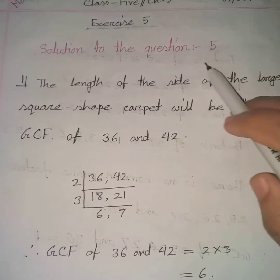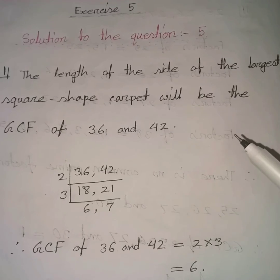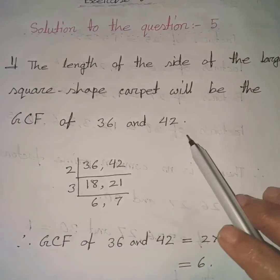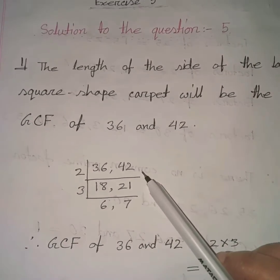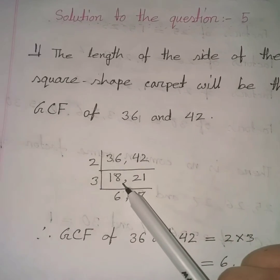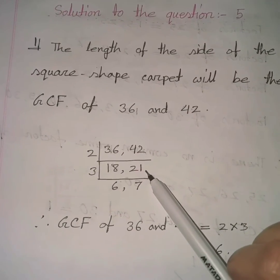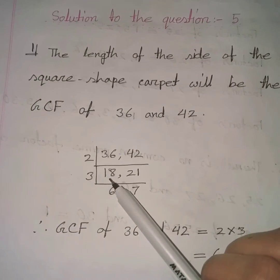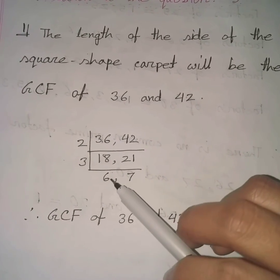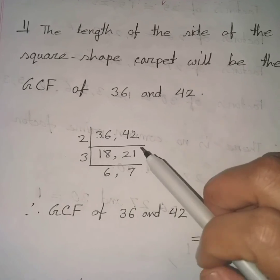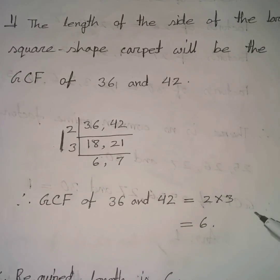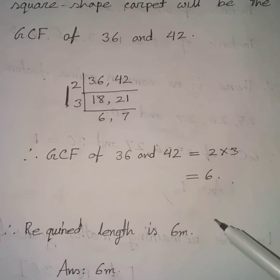The length of the side of the largest square-shaped carpet will be the GCF of 36 and 42. Both 36 and 42 are even, so divide by 2: 36÷2=18, 42÷2=21. Then 3 is the common prime factor of 18 and 21, so divide: 18÷3=6, 21÷3=7. No other common prime factor exists. Therefore GCF = 2 × 3 = 6. The required length is 6 meters.